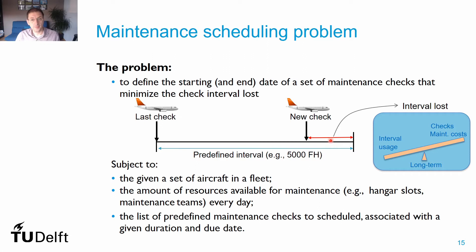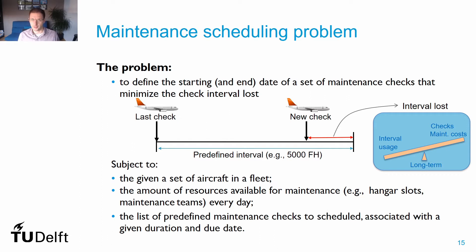We are going to minimize the wasted interval left after we perform a maintenance check. This wasted part is called interval lost, and it is the difference between the predefined interval — defined in flight hours, flight cycles, and calendar days — and the value of the usage parameters at the moment the check is scheduled. Note that if this interval lost increases, the number of checks and maintenance costs in the long term will also increase.